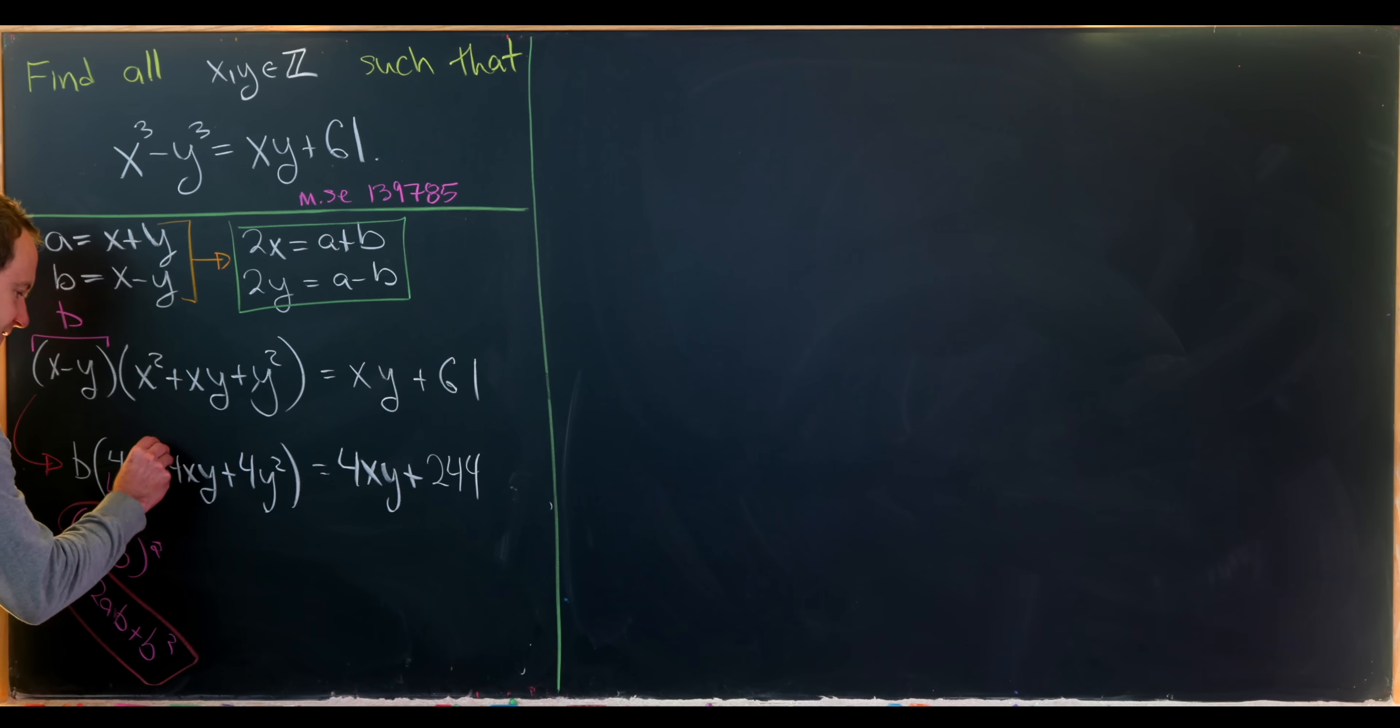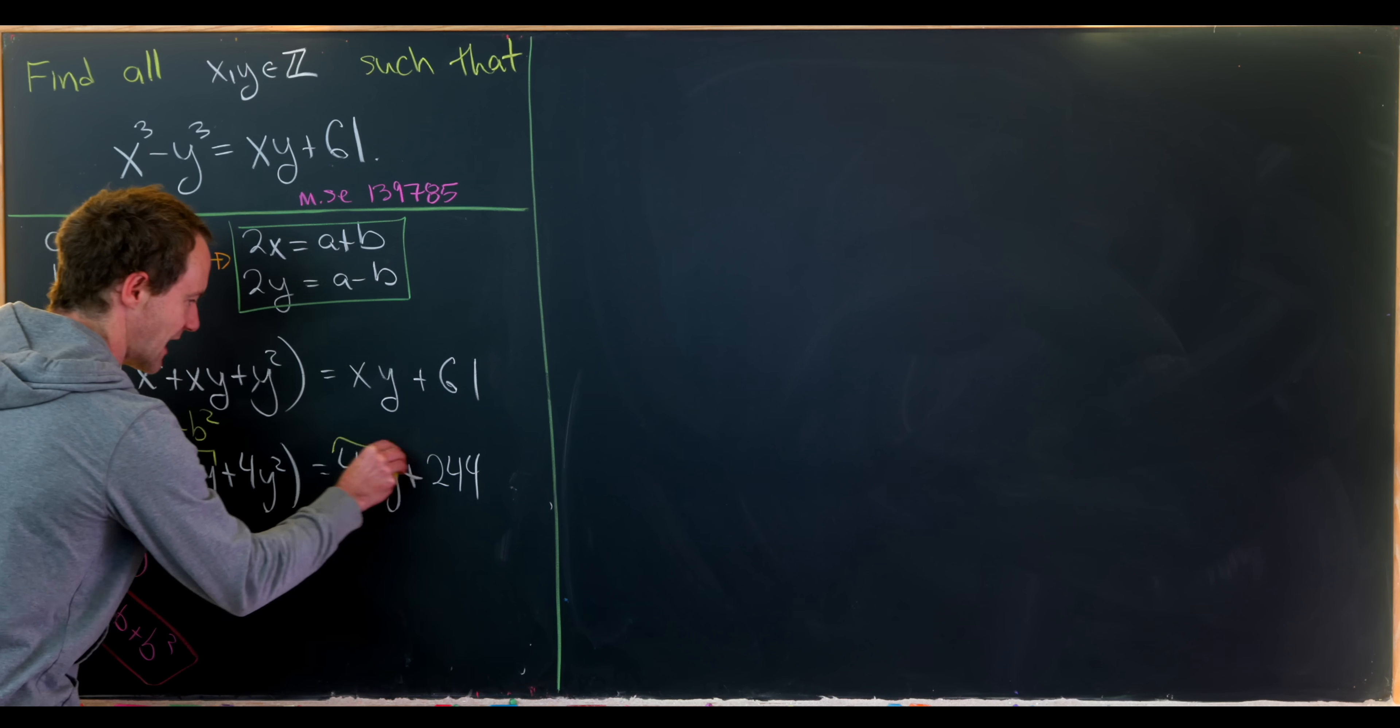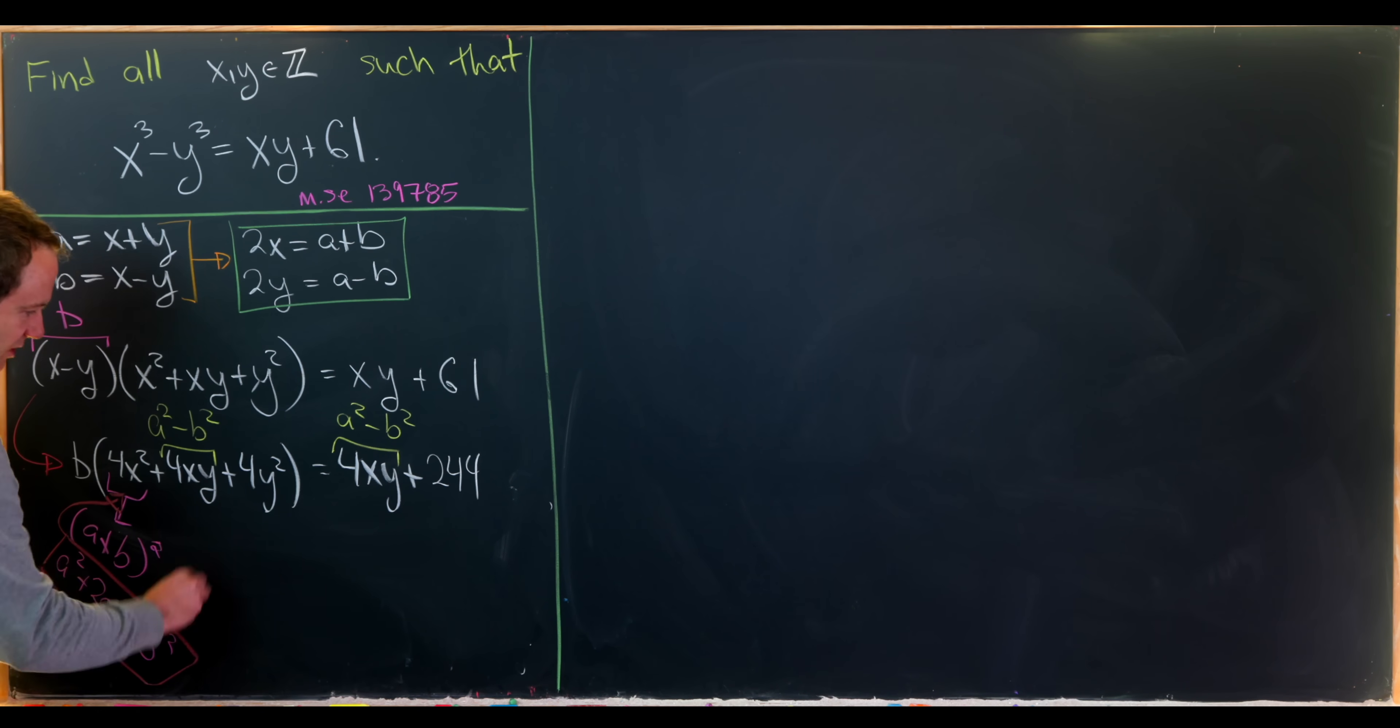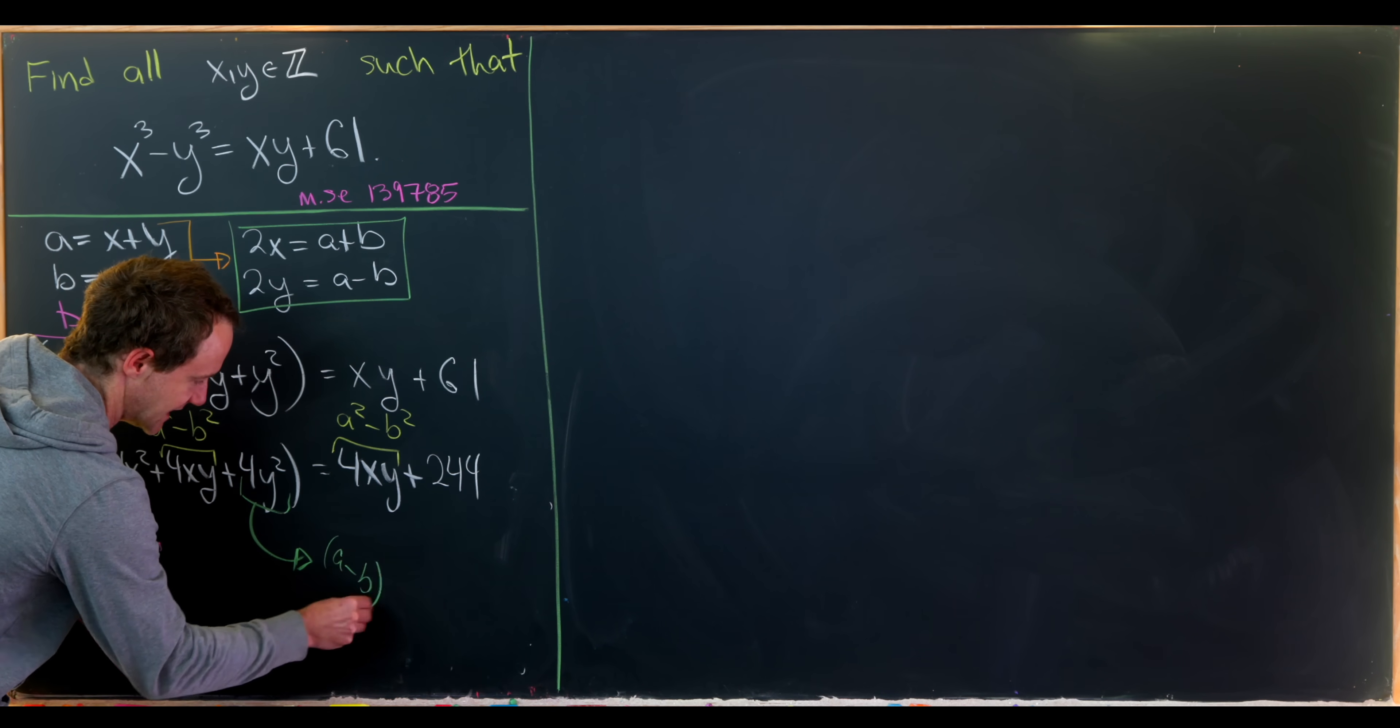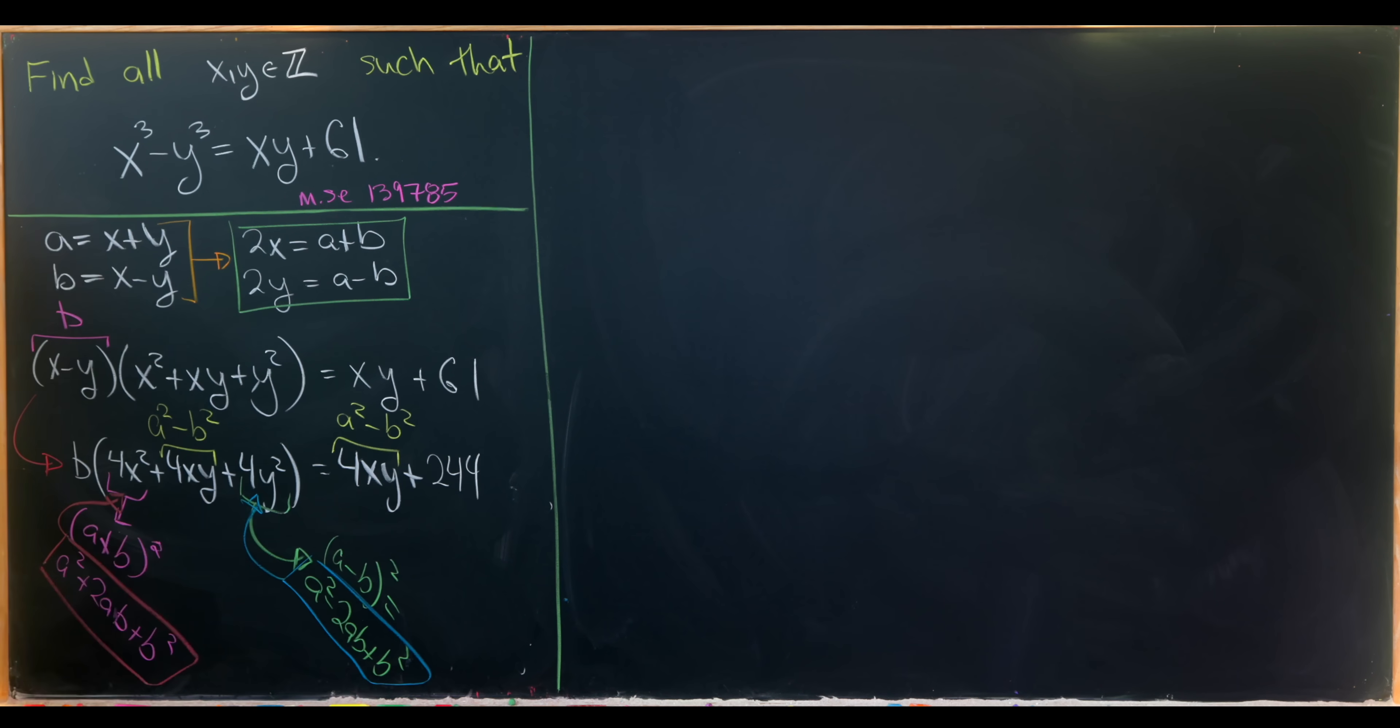Then what do we get for this 4xy term? That's 2x times 2y, but that's our difference of squares formula a squared minus b squared. But that's what we have over here as well. And what remains is this 4y squared term which is 2y quantity squared, or a minus b squared, which expands to a squared minus 2ab plus b squared.